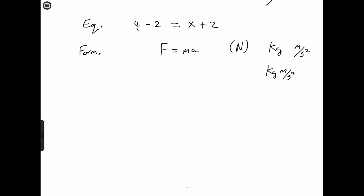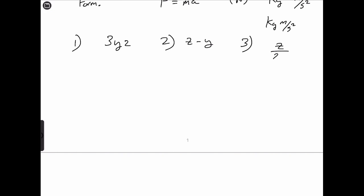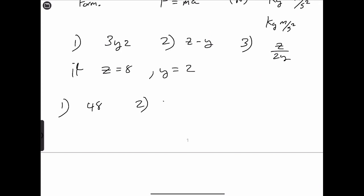Algebraic expressions can contain more than one variable. We can evaluate expressions such as 3YZ, 2Z minus Y, or 3Z divided by 2Y. If Z is equal to 8 and Y is equal to 2, then expression 1 gives us 48, expression 2 gives us 6, and expression 3 gives us 2.